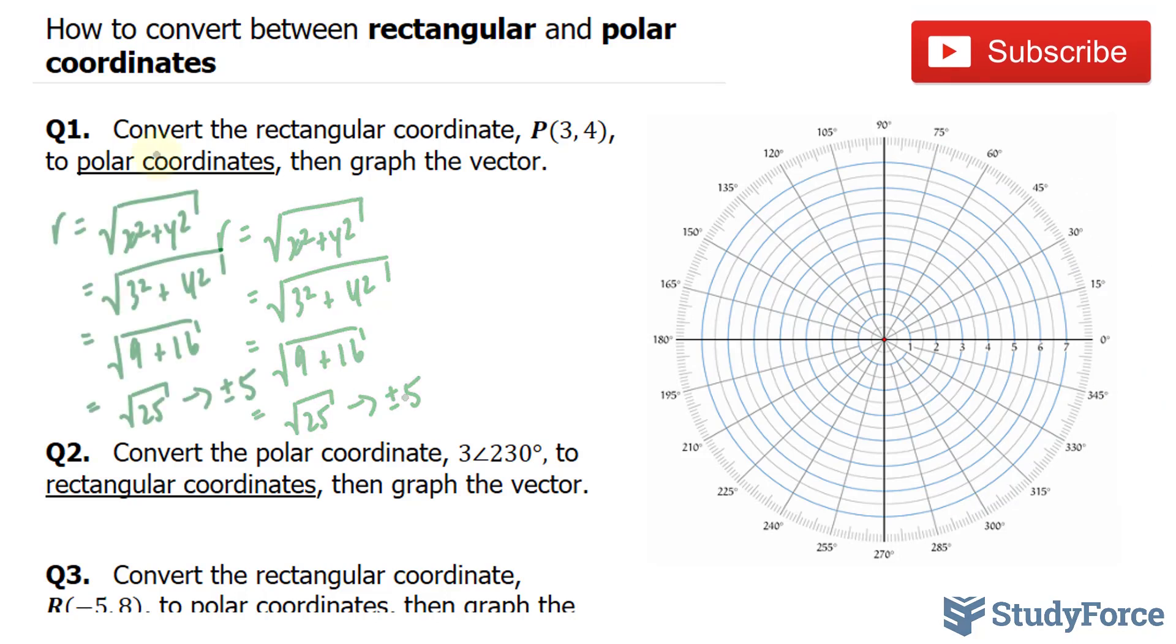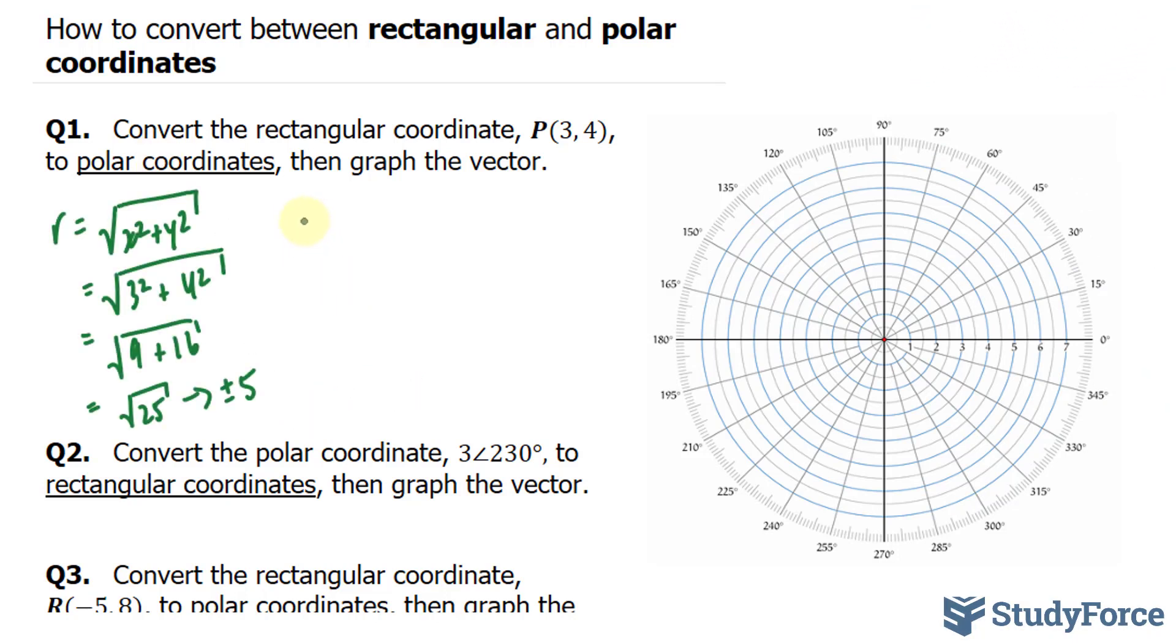Next, we'll find out the angle. To find out the angle, we need to use the formula theta is equal to arc tan y over x. Arc tan means the inverse of tan. So, we have the inverse tangent of y, 4 over 3.